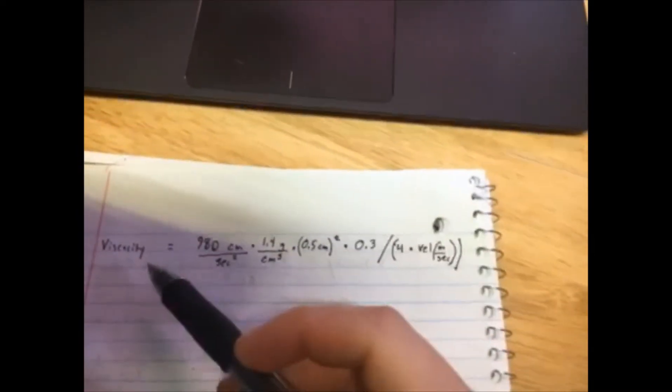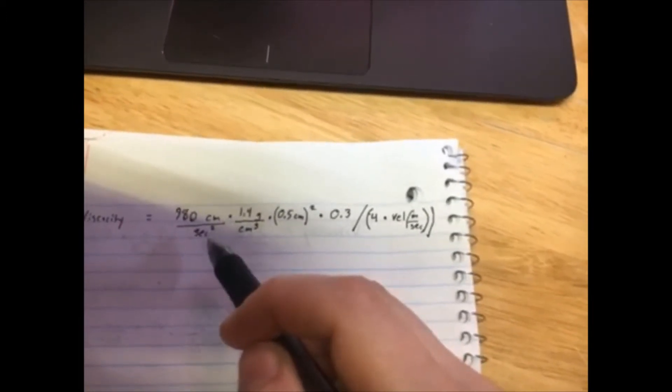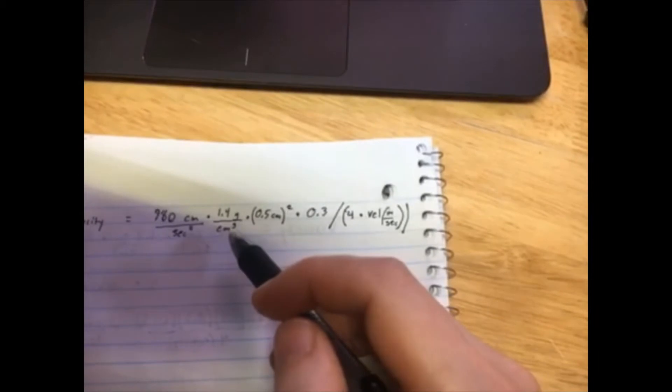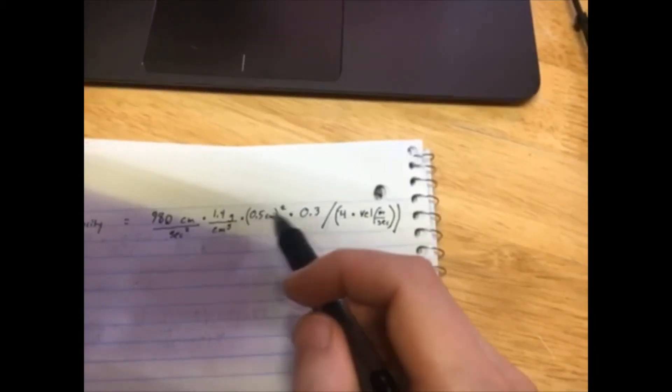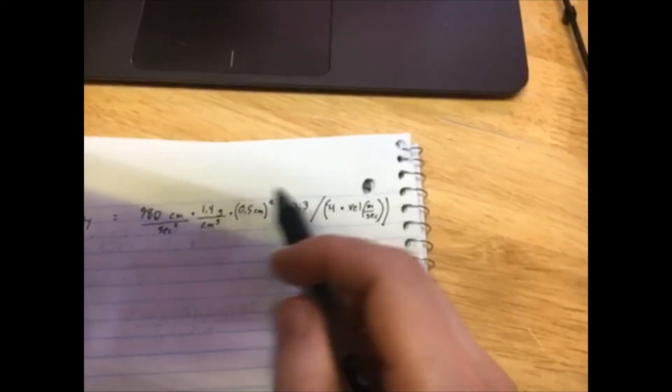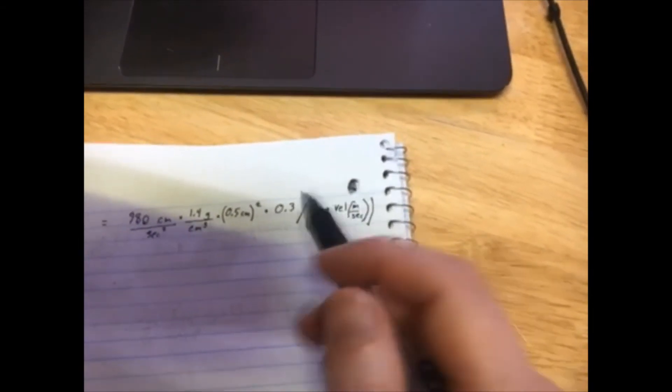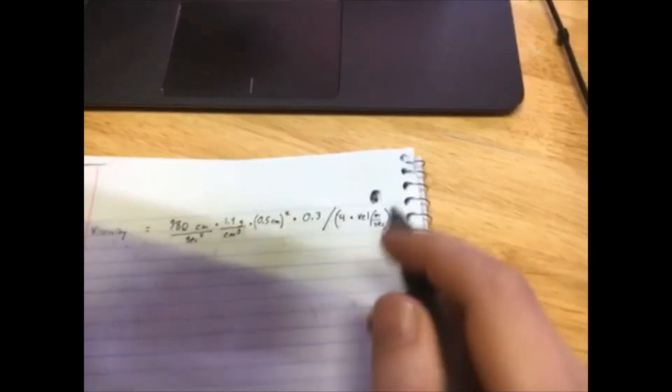So what that looks like with units: the viscosity is gravitational acceleration in centimeters per second squared times density in grams per cubic centimeter times flow width in centimeters, and that whole thing is squared, times 0.3, which is sine of the slope angle, divided by four times the velocity in meters per second.